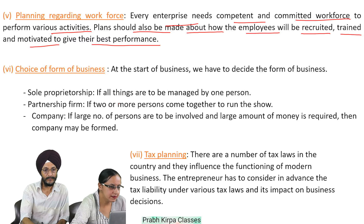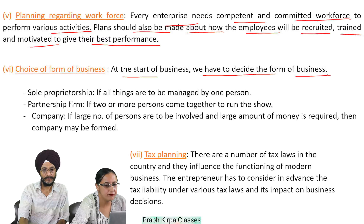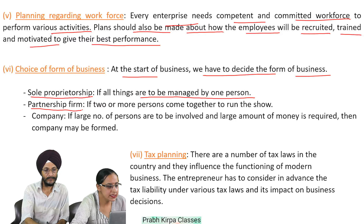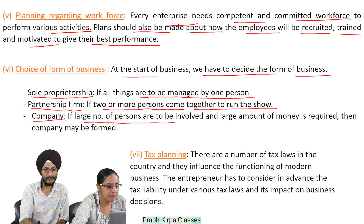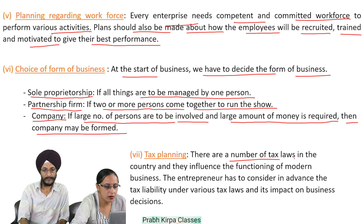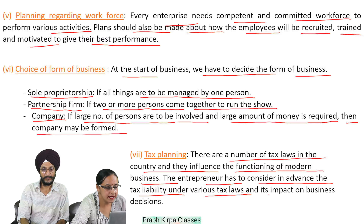Sixth, choice of form of business: at the start of business, we have to decide the form. Sole proprietorship if all things are to be managed by one person; partnership firm if two or more persons come together to run the show; company if a large number of persons are to be involved and a large amount of money is required. Seventh, tax planning: there are a number of tax laws in the country and they influence the functioning of modern business. The entrepreneur has to consider in advance the tax liability under various tax laws and its impact on business decisions.